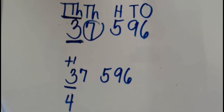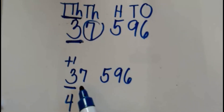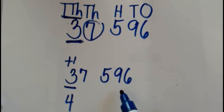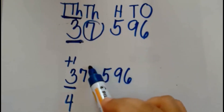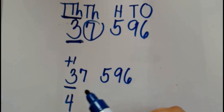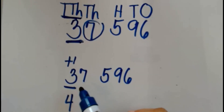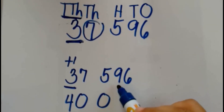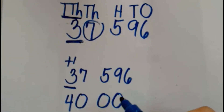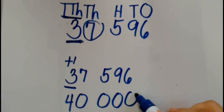After adding 1 to the digit we are rounding, we do Step 4, which is to change all the digits to the right side of the digit we are rounding into 0. There are 4 digits to the right: 7, 5, 9, and 6. So we change all of them into 0. 7 becomes 0, 5 becomes 0, 9 becomes 0, and 6 becomes 0.